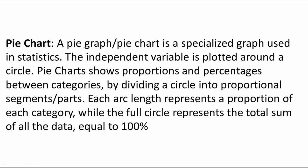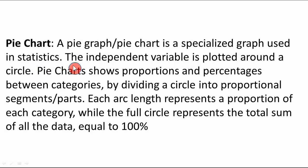Now let us move on to the pie chart. A pie chart is a specialized graph used in statistics. The independent variable is plotted around a circle. In a pie chart we use only one variable, and the values of that variable are depicted as a percentage of the whole. Unlike a line graph where we need x and y axis values, in a pie chart we need only one variable. Pie charts show proportions and percentages between categories by dividing a circle into proportional segments.